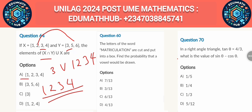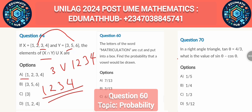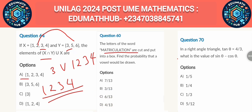For the second question, we are told that the letters of the word 'matriculation' are cut and put into a box. We need to find the probability that a vowel will be chosen. The vowels are A, E, I, O, U — five vowels in the English language. Now let's check how many letters are in 'matriculation' altogether.